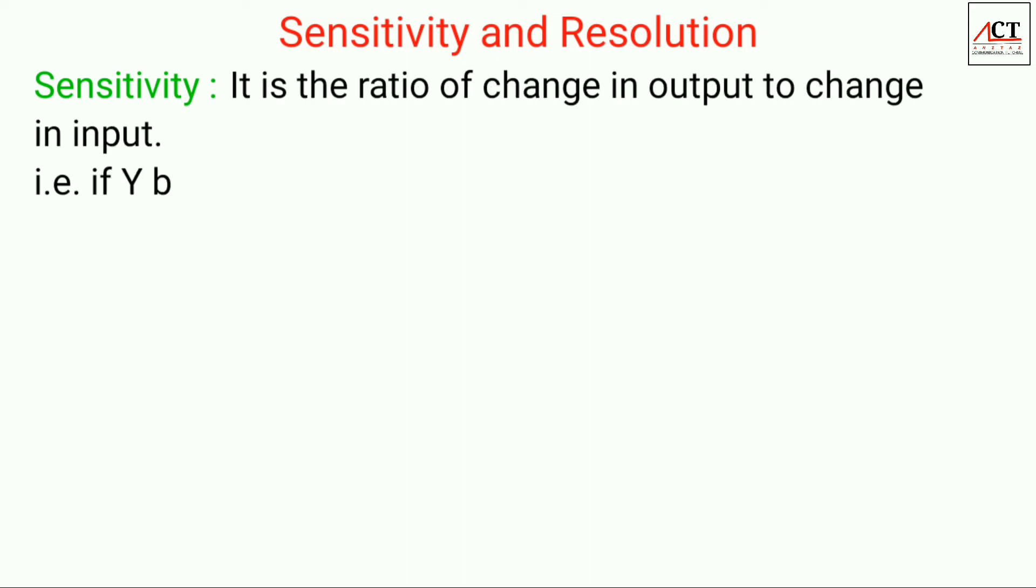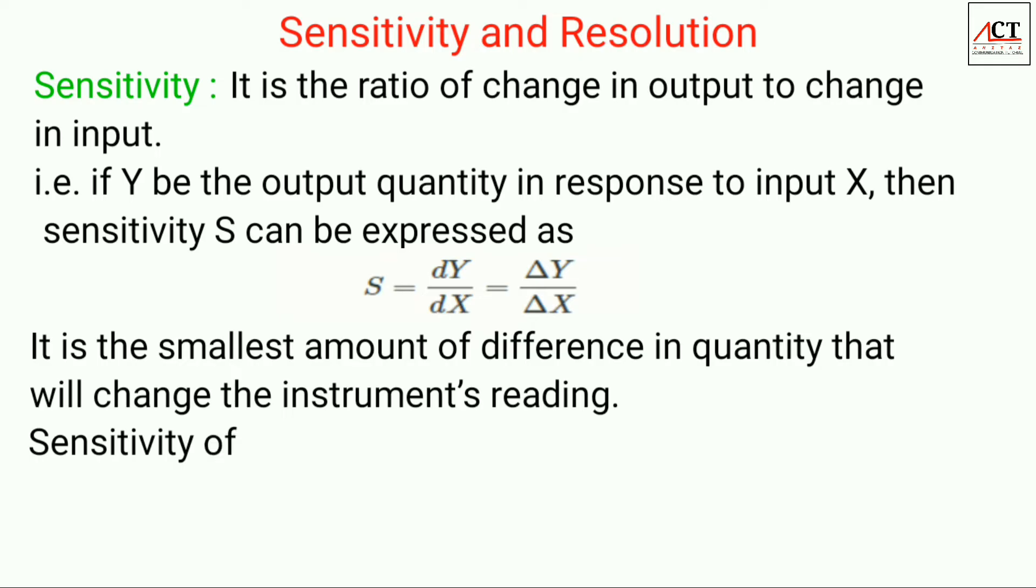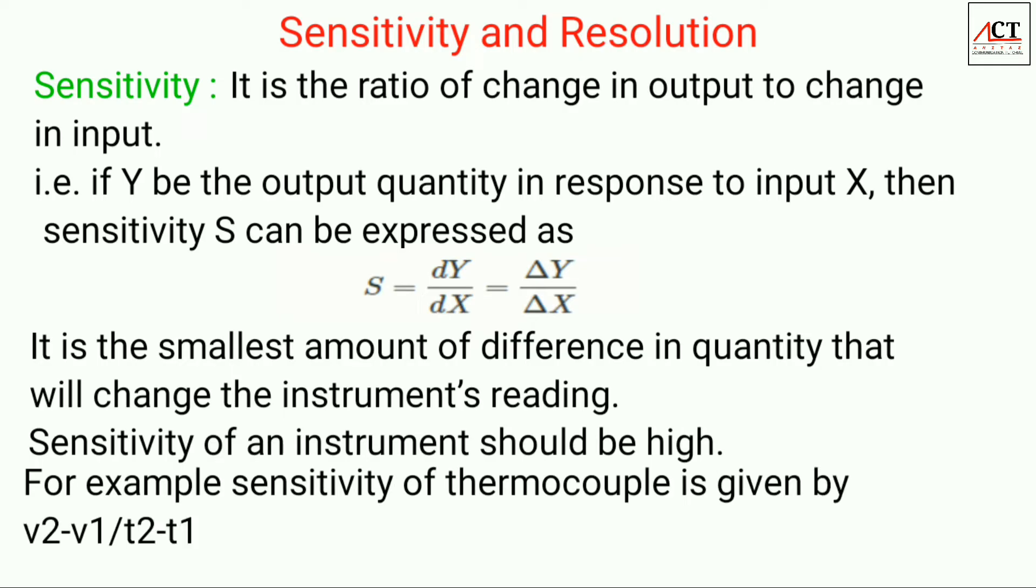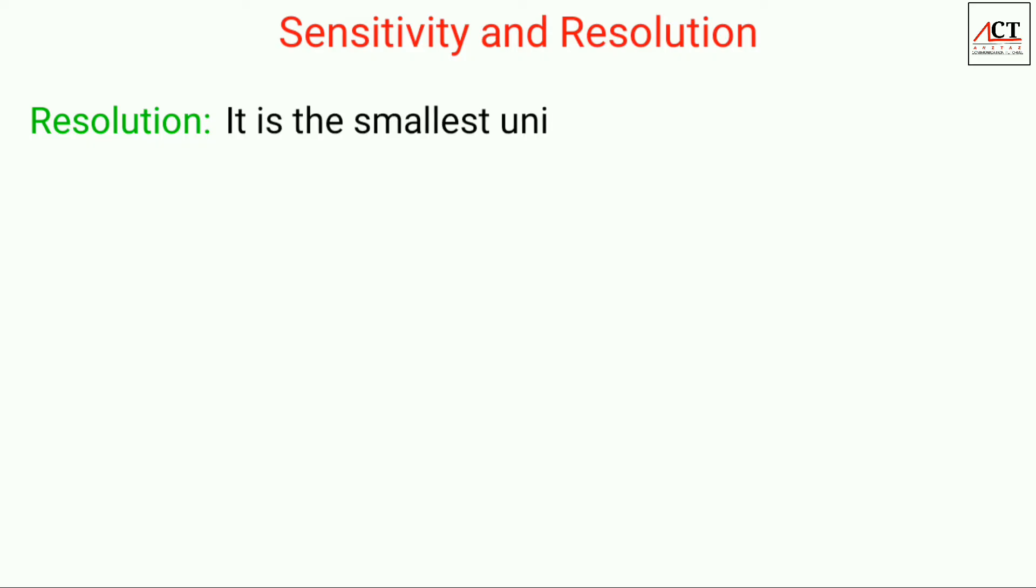The next static characteristic is sensitivity and resolution. Sensitivity is the ratio of change in output to change in input. If y be the output quantity with respect to input x, then sensitivity is given as dy by dx. It is the smallest amount of difference in quantity that will change the instrument's reading, and it should be high. For example, sensitivity of a thermocouple is given by change in voltage to change in temperature.